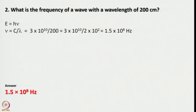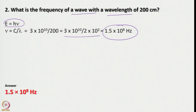Now let us go to another very simple problem. What is the frequency of a wave with a wavelength of 200 centimeters? We are familiar with energy as related to frequency: E equals hν, and ν equals c divided by λ, where c is the velocity of light — 3×10¹⁰ centimeters per second or 3×10⁸ meters per second. Using 200 centimeters as the wavelength, if you calculate, what we get is 1.5×10⁸ hertz. This is the answer — very simple.